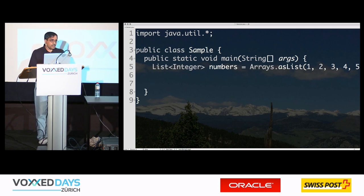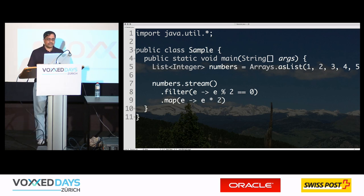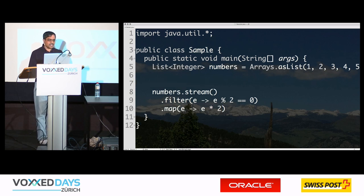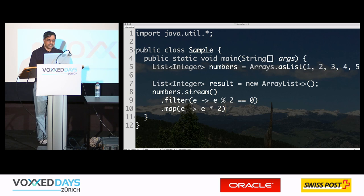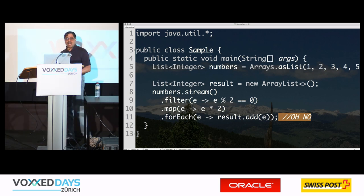I want to double the values and put them into a collection. So: numbers.stream().filter(n -> n % 2 == 0).map(n -> n * 2). Everything went beautifully so far, and then the programmer takes a U-turn for the worse — they create a List<Integer> result = new ArrayList<>(), then say forEach(e -> result.add(e)). Don't ever do this. This is a terrible programming practice.